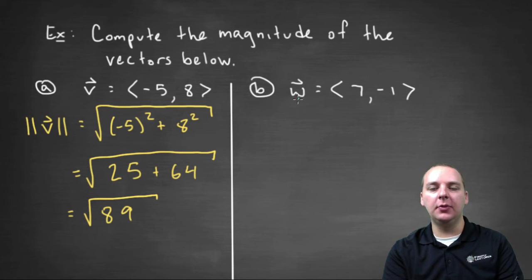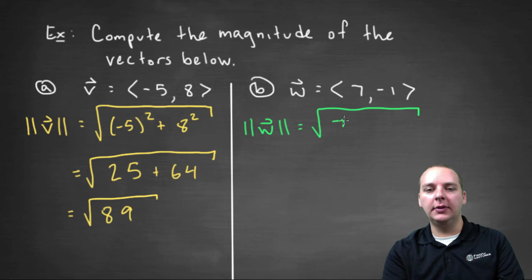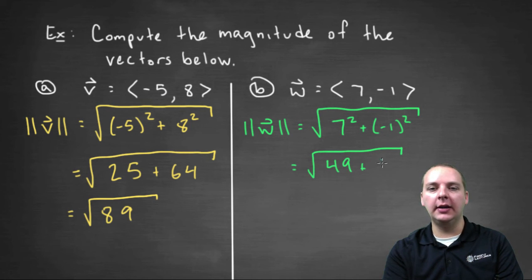Alright, let's do the same thing with vector w. The magnitude of w would be the square root of seven squared plus negative one squared. So we get the square root of forty-nine, seven squared is forty-nine. Negative one squared is one,